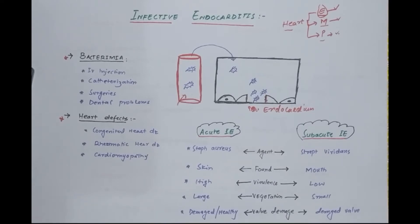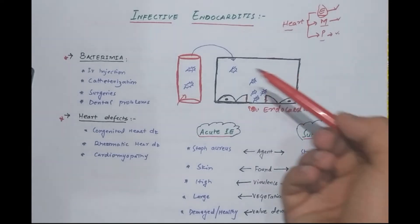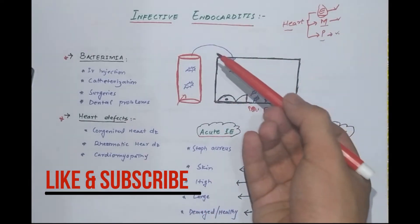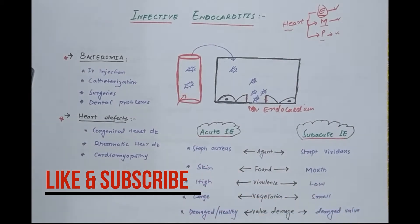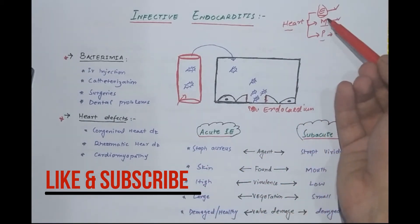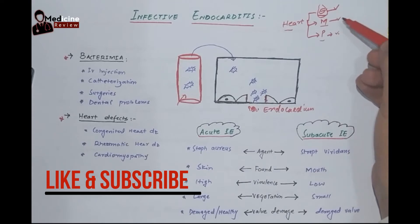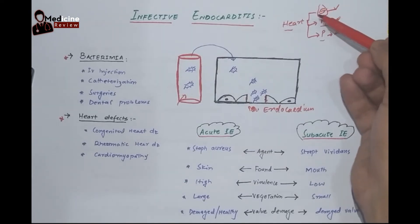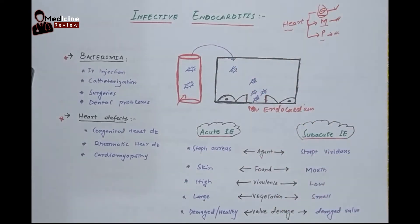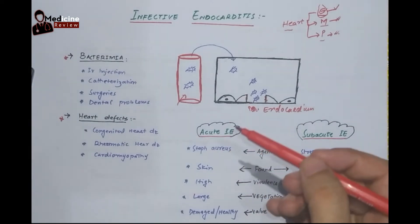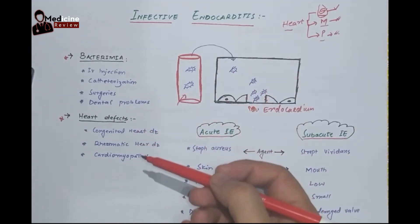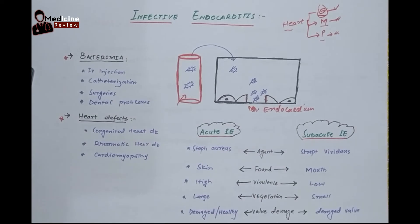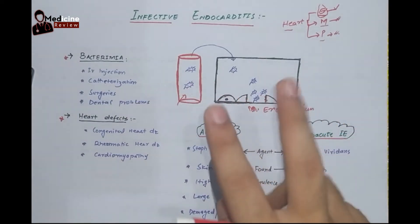Welcome to my YouTube channel. Today's topic is infective endocarditis. Endocarditis means inflammation of the endocardium. As we know, the heart consists of three walls: the endocardium, which is the innermost; the myocardium, which is the middle muscular layer; and the outermost, the pericardium. Whenever this endocardium gets inflamed, we call it endocarditis, and if this inflammation is of infective origin, we call it infective endocarditis.